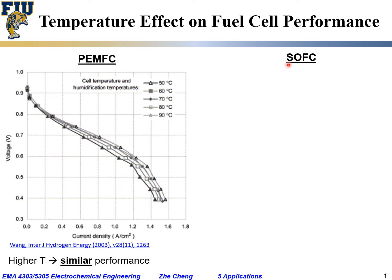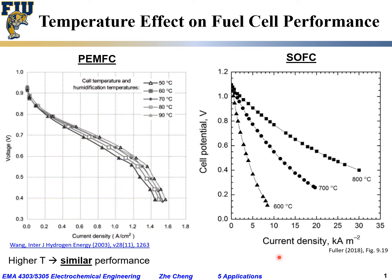In comparison, for a high-temperature fuel cell such as the solid oxide fuel cell, this is an example of the same voltage versus current density plot. As the temperature changes from 800 to 700 to 600 degrees C, you see the current — and as a result, the maximum power — drops dramatically.